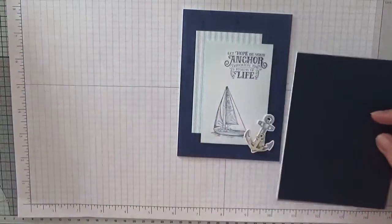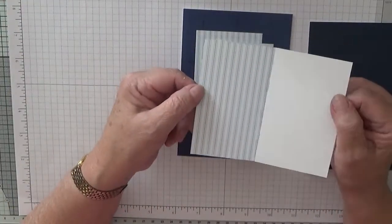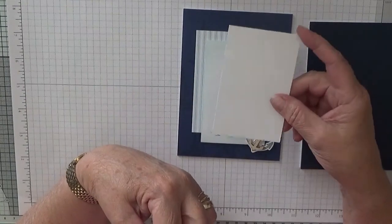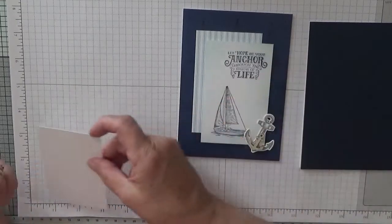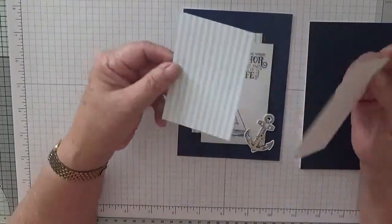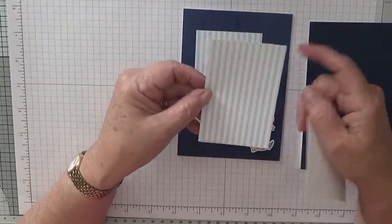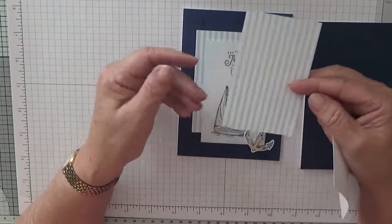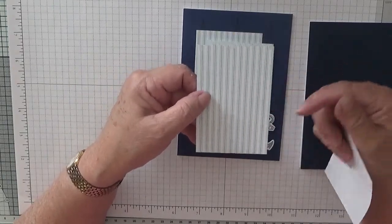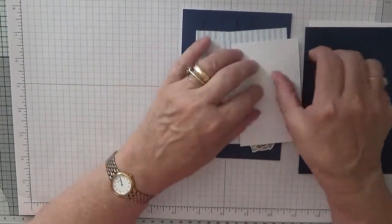I've got one piece of white at 2 and 1 half inches by 4 inches. And a piece of designer series paper at 2 and 1 half inches by 4 inches. This is out of the Sailing Home Paper Series Pack.